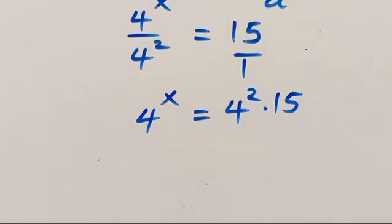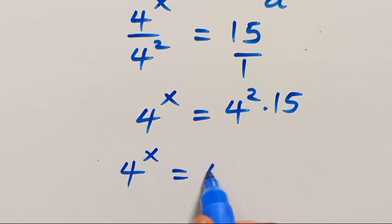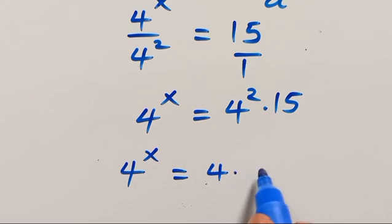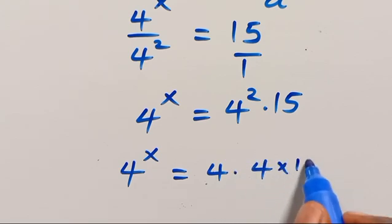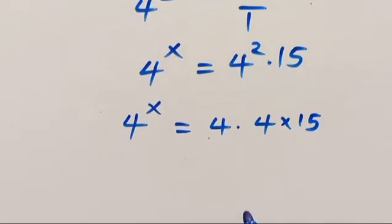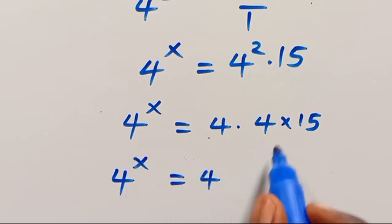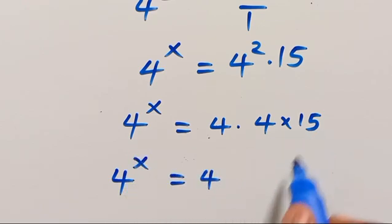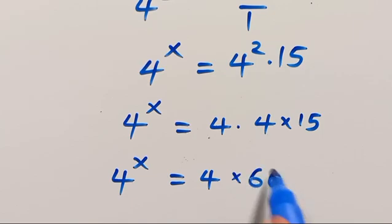So from here, we can have 4 to the power of X equals 4 times 4 multiplied by 15. We have 4 to the power of X equals 4 times 60.